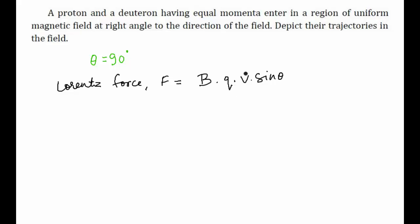is the charge, v is the velocity of the charge, and theta is the angle between the velocity and the magnetic field. Here it is given that they enter at right angles, which means theta equals 90 degrees.